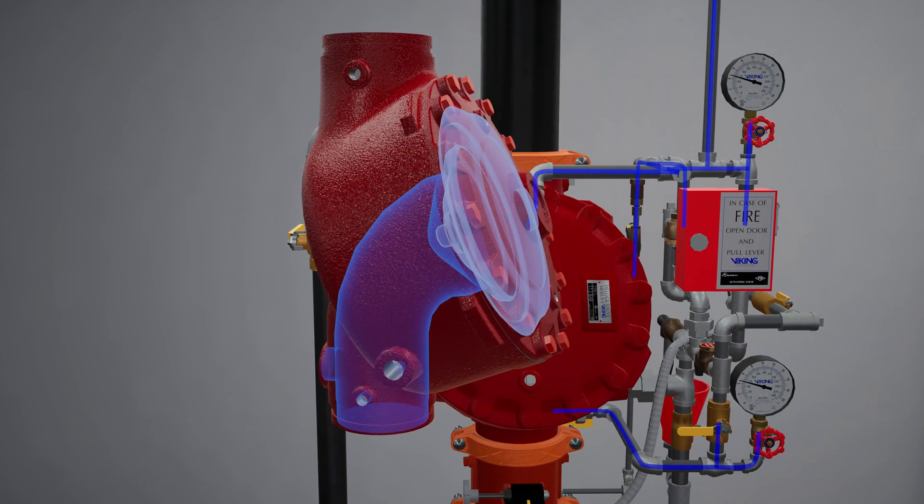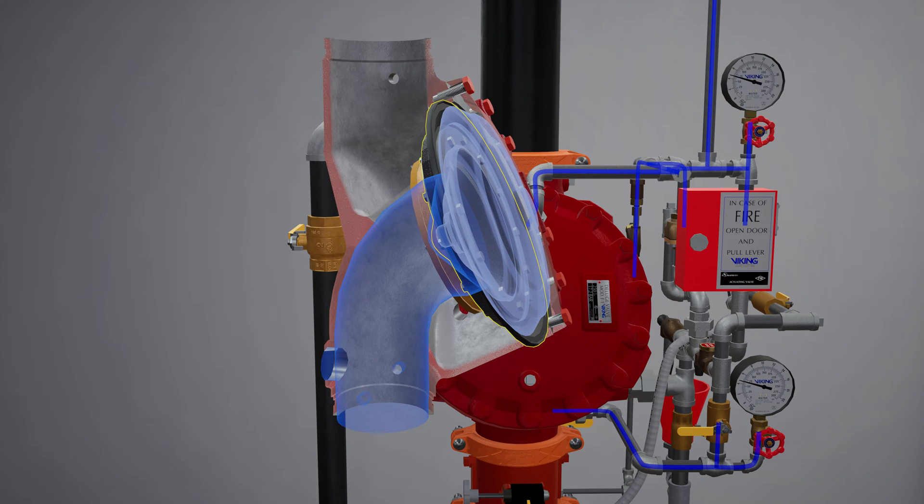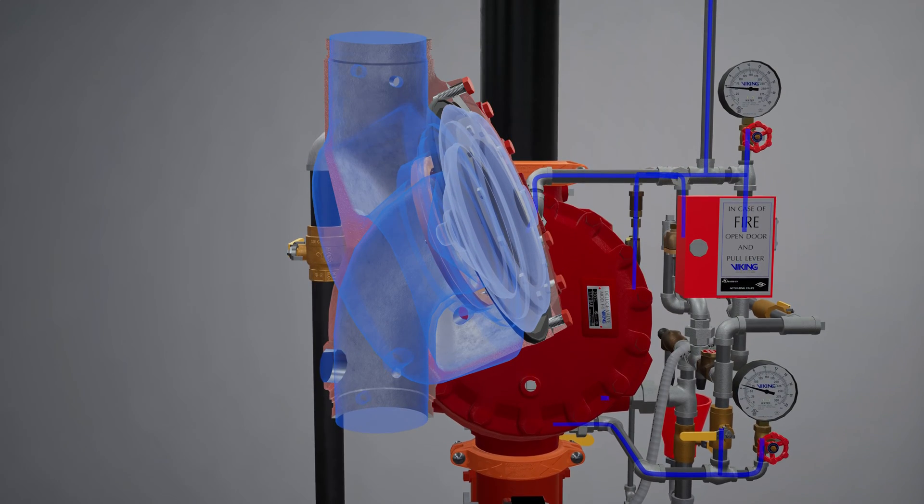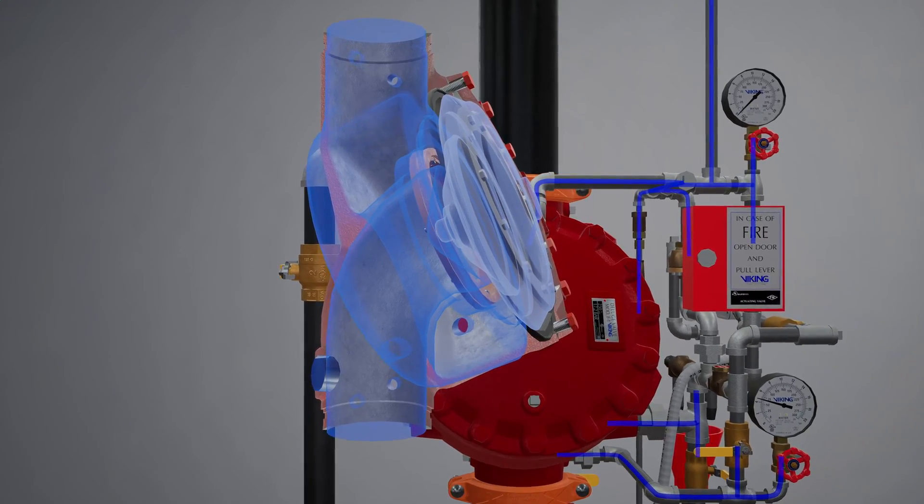Once water pressure is released from the priming chamber, the clapper is forced open by the supply water pressure from the inlet chamber, filling the valve body and connected trim with water.